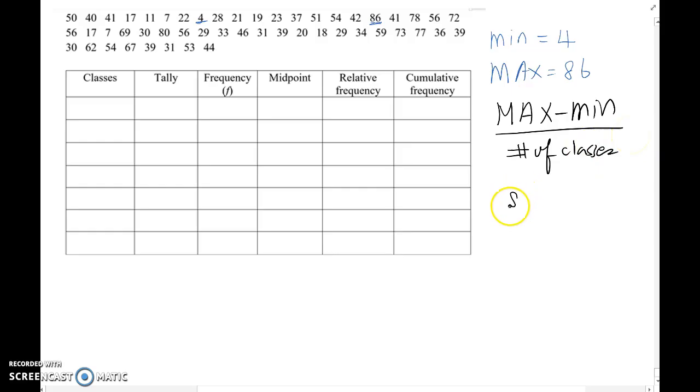So this time, maximum is 86 and the minimum is 4, and we are going to create 7 different classes. So you calculate 86 minus 4 over 7. If you calculate then, you will get 11.714 something like that, right?